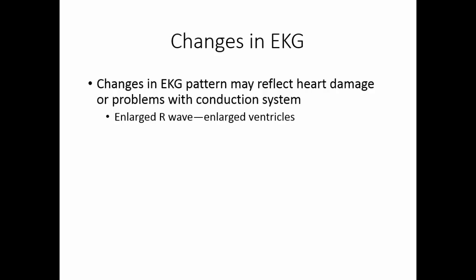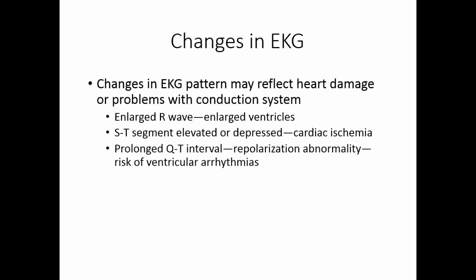For example, an enlarged R wave may indicate enlarged ventricles. An ST segment that is either elevated or depressed can indicate cardiac ischemia or damage to the cardiac muscle. A prolonged QT interval indicates some sort of repolarization abnormality of the ventricles, which can be a precursor to ventricular arrhythmias.